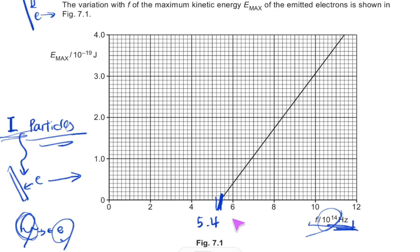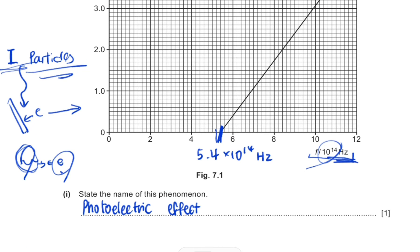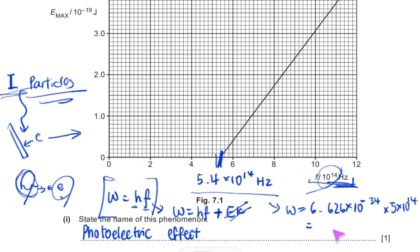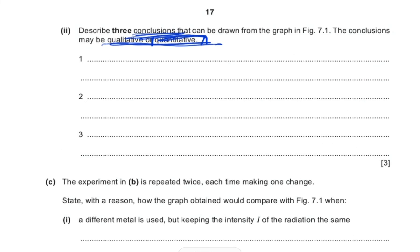The threshold frequency is approximately 5.4 × 10¹⁴ Hz. The work function W equals hf₀, which you should memorize as it is not given on the formula sheet. This comes from the fact that the energy going into the electron equals the work function hf₀ plus the kinetic energy of the emitted electron. At the threshold frequency the kinetic energy is zero, so W = hf₀. You multiply Planck's constant by the threshold frequency to get the work function.